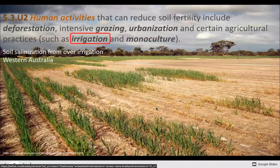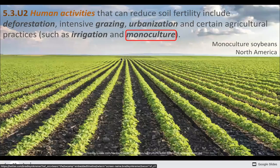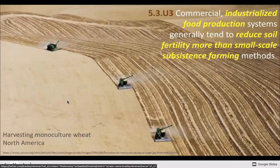Certain agricultural practices also affect soil. Irrigation — using too much water — can lead to salinization. Planting one crop, especially one that uses a lot of nutrients, can especially deplete the soil. For example, if you're growing soybeans, you probably have to re-fertilize your land every single year.